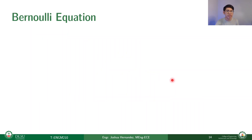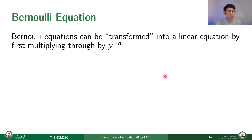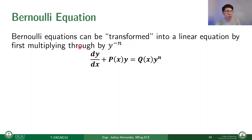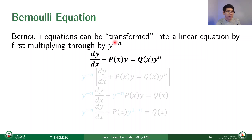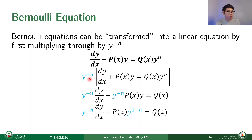Bernoulli equations can be transformed into a linear equation by first multiplying through by y^(−n). Distributing this to the whole equation, we get y^(−n) · dy/dx + P(x) · y^(1−n) = Q(x). If we let v = y^(1−n) and take its derivative, we get dv/dx = (1−n) · y^(−n) · dy/dx, or equivalently dy/dx = y^n / (1−n) · dv/dx. Substituting back, y^n and y^(−n) cancel, leaving 1/(1−n) · dv/dx.